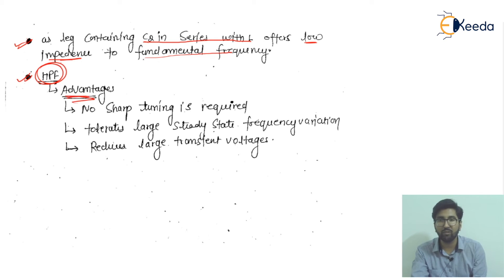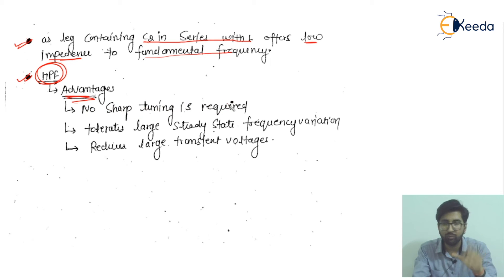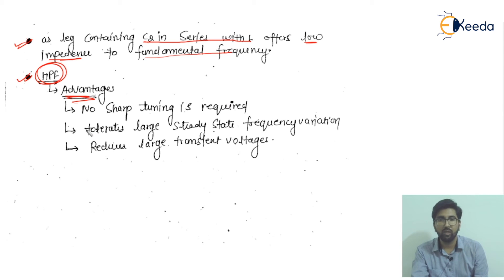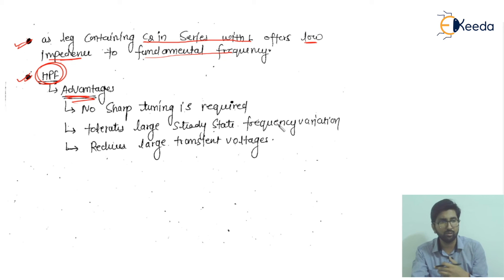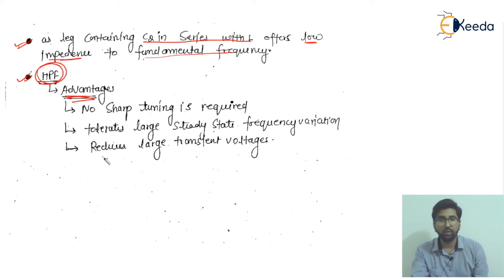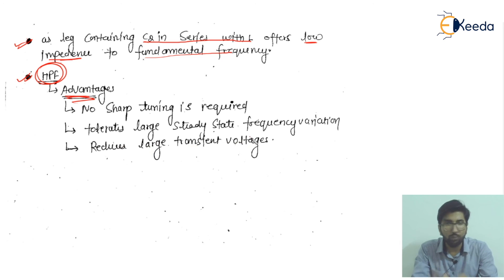The advantages of the high-pass filter are: first, no sharp tuning is required, as it operates across a band beyond the cutoff frequency. Second, it can tolerate large steady-state frequency variations in the system. Third, it provides protection by reducing large transient voltages. So the high-pass filter not only filters harmonics but also offers system protection.